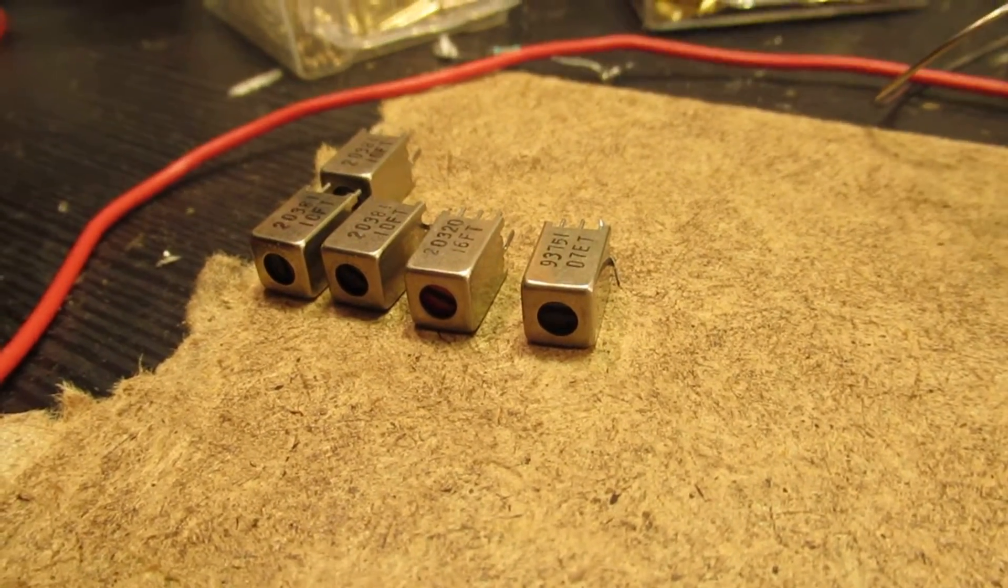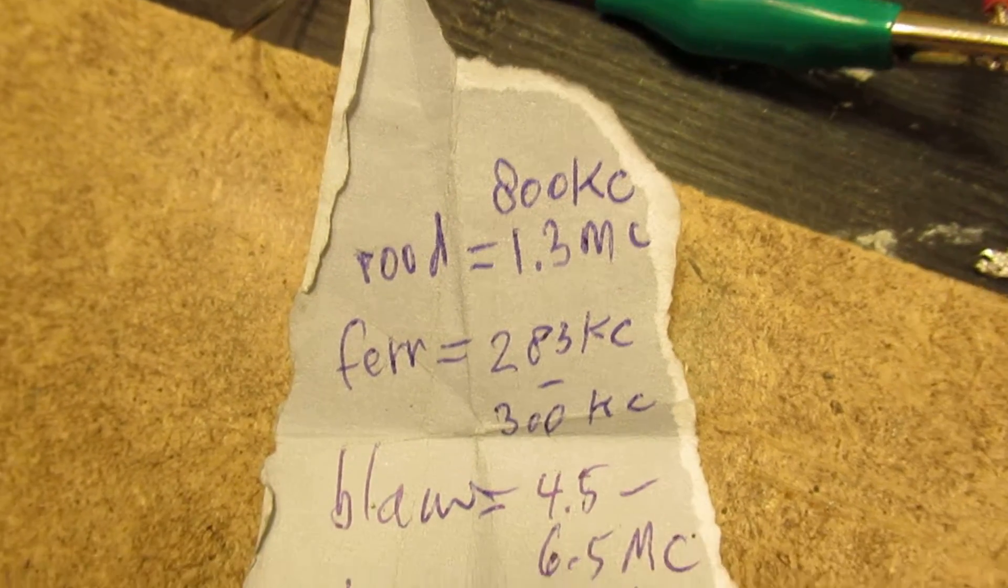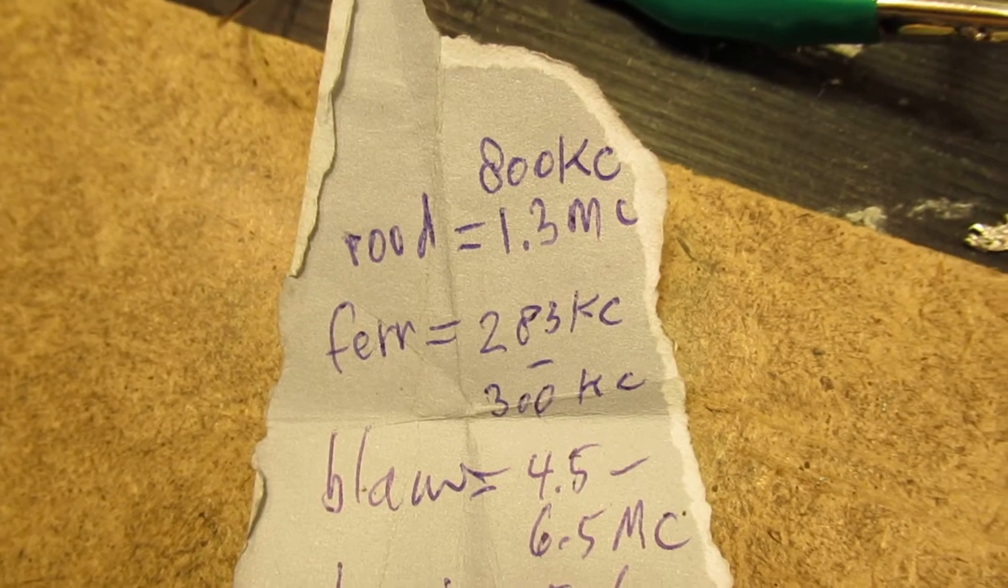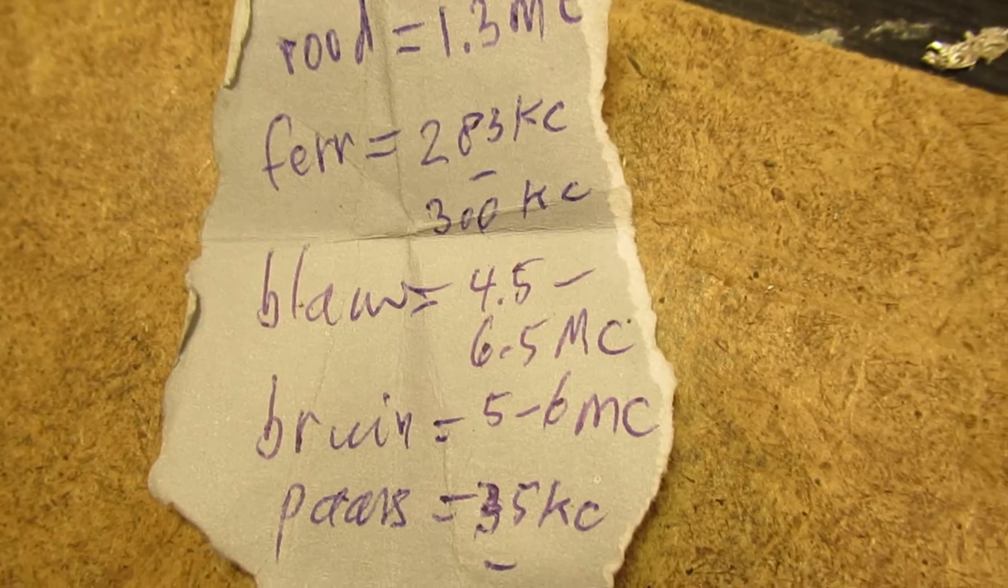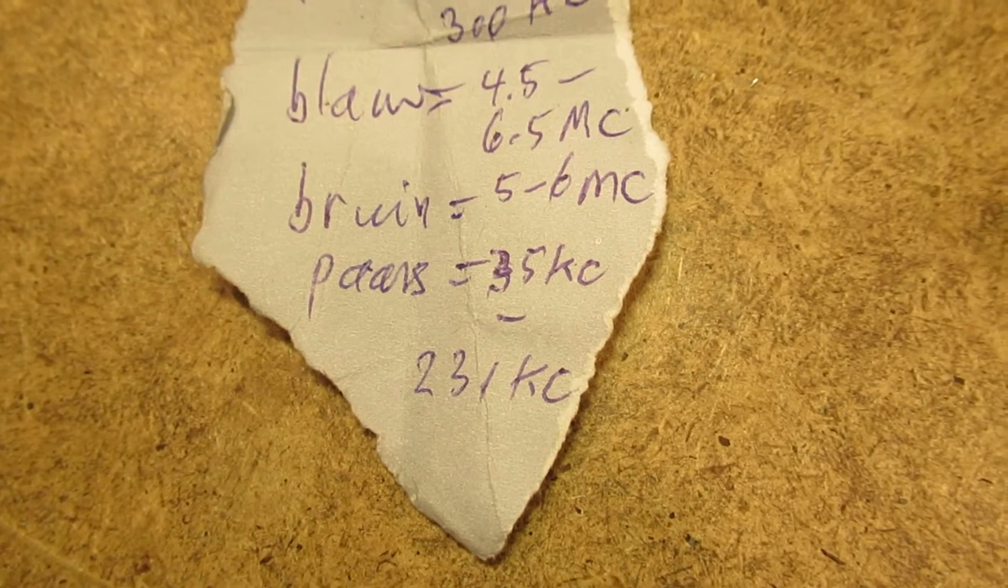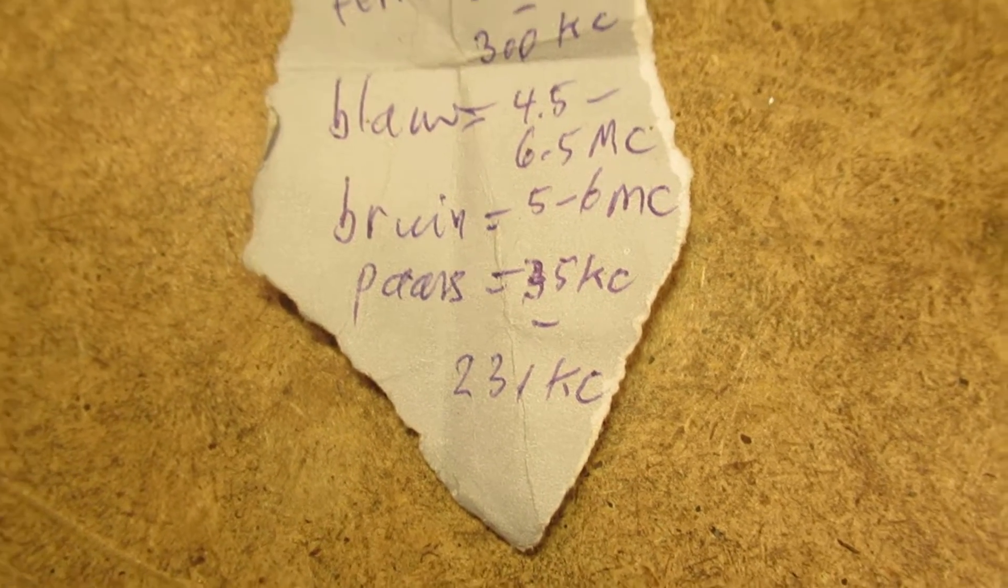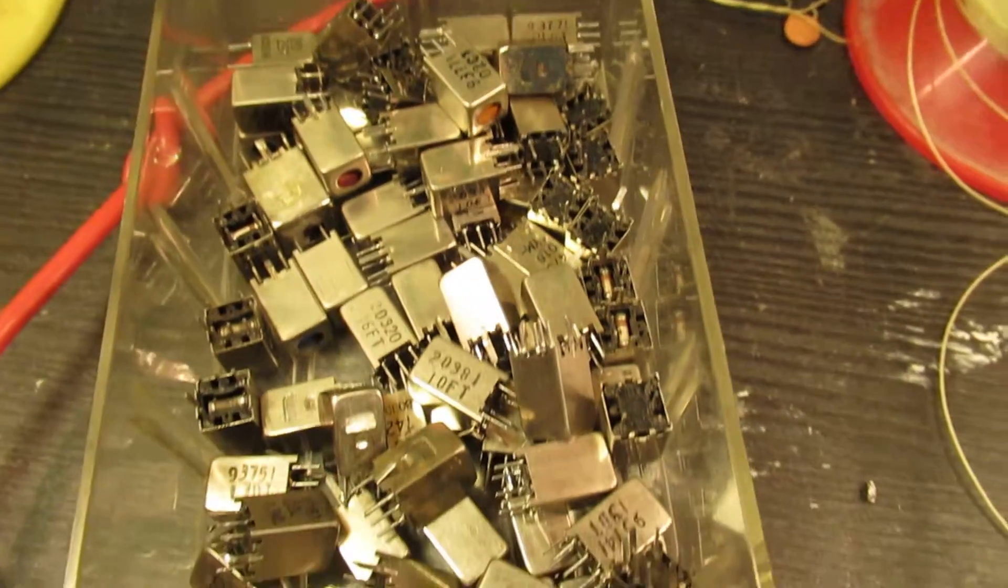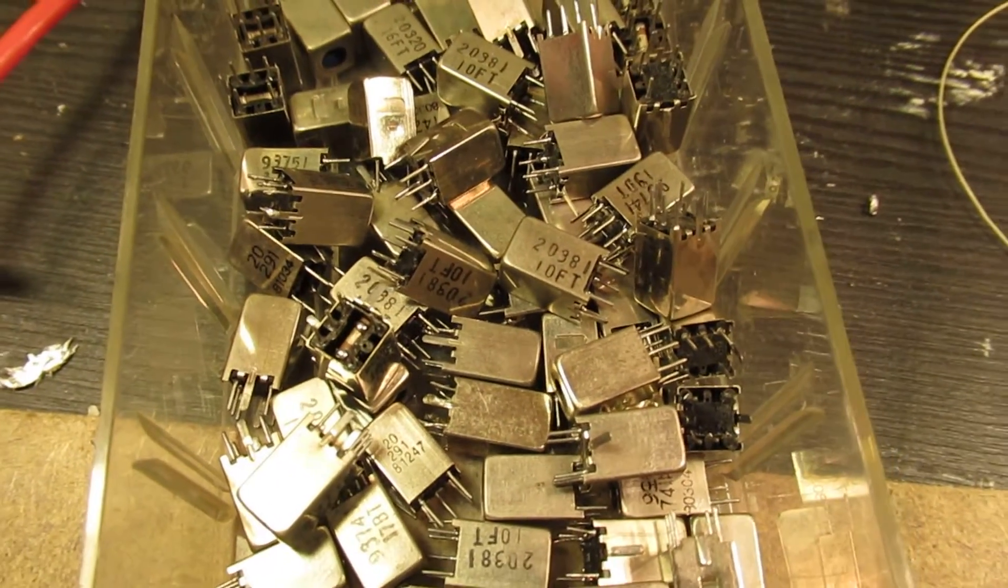They can be found by looking at the core of these IF cans - the core indicates the frequency where they are used. For instance: red 800 kilocycles up to 1.3 megacycles, ferrite 283 to 300 kilocycles, blue 4.5 to 6.5 megacycles, brown 5 to 6 megacycles, purple 35 to 231 kilocycles. I've tested them with an oscillator of course.